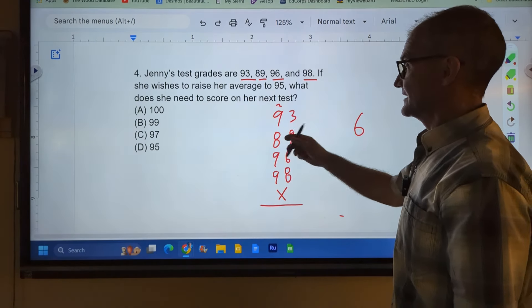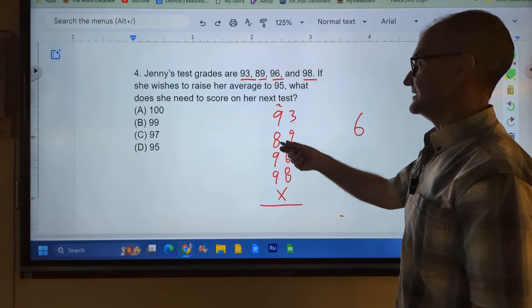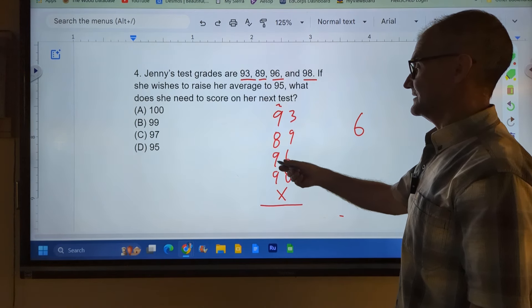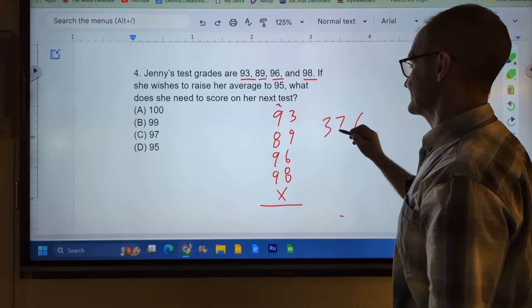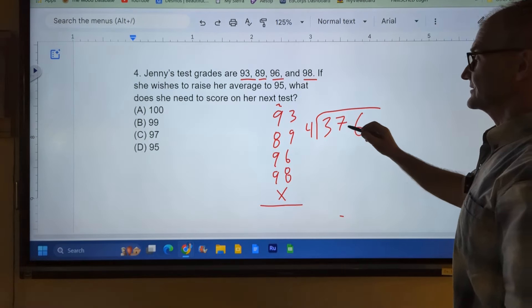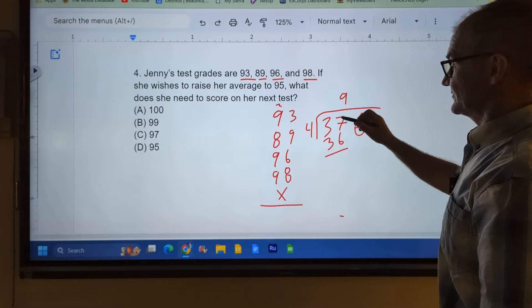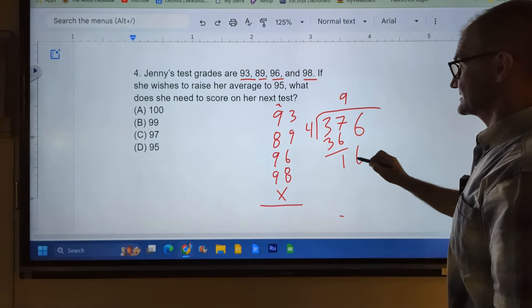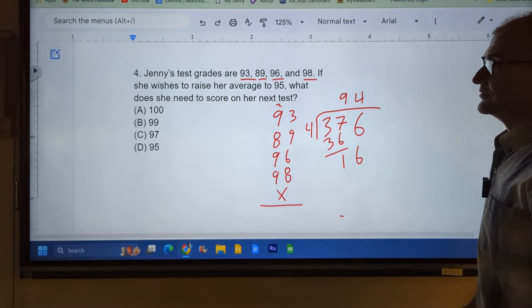Carry the 2. 11, 2 and 9, 11, plus 8, 19, 28, 37. So I have 376 divided by the four tests she's taken so far. Four goes into 37 nine times to get 36. 37 minus 36, 1, 6. Four goes into 16 four times. So she currently has a 94 average.